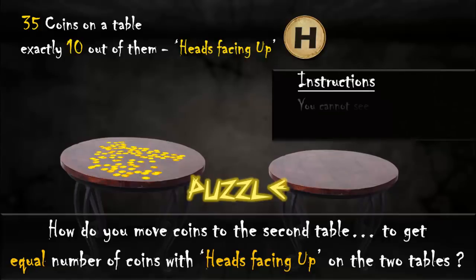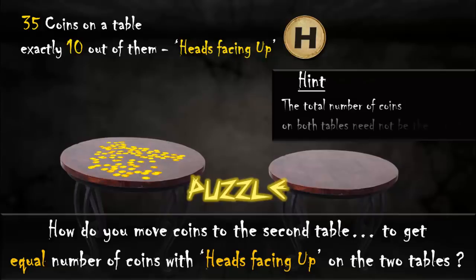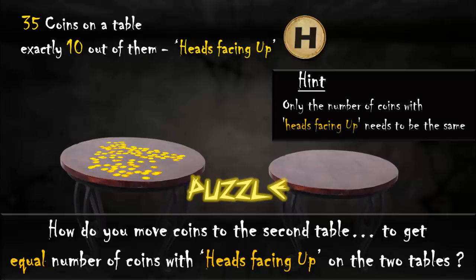Due to darkness, you cannot see the coins. Also, you cannot feel the texture of coins. The total number of coins on both tables need not be the same. Only the number of coins with heads facing up needs to be the same.